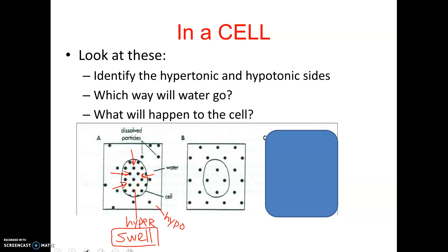In our second situation, the concentration appears equal on both sides — even though there are more dots outside, they're spread out evenly — so this would be called isotonic, because both sides have equal amounts of solute. Water would go both directions and the cell would stay the same. But be careful: don't say water wouldn't move. This is random motion — water molecules are always moving, just like molecules in air or any liquid. The amount going in and out would be equal.